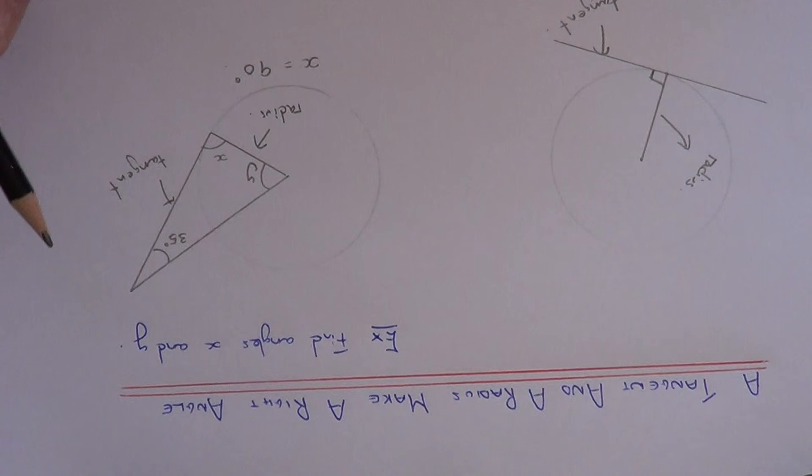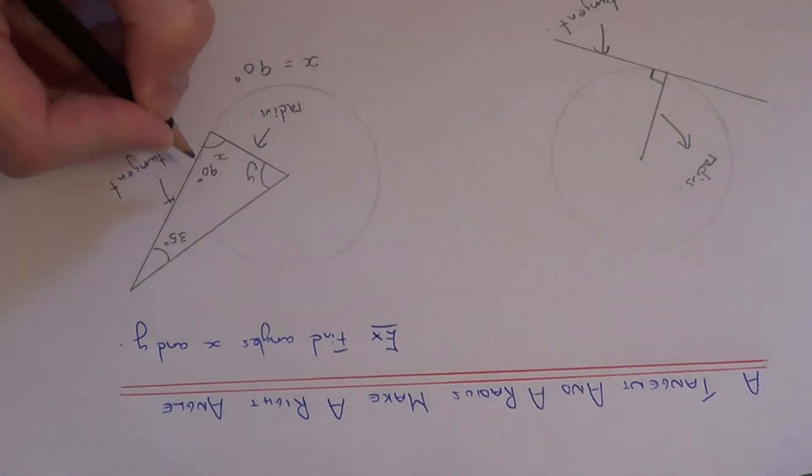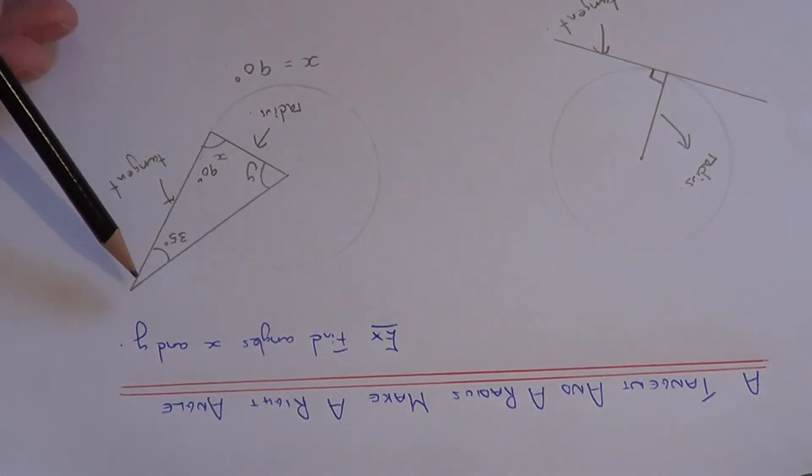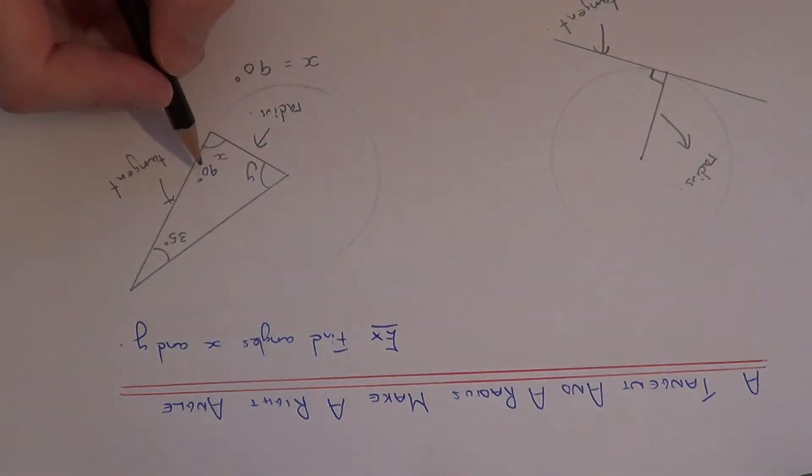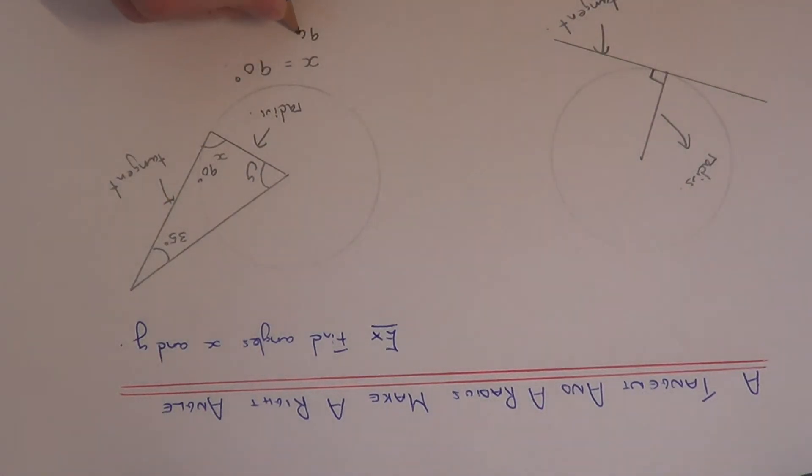So we just now need to work out angle y. This is quite easy because the angles in a triangle add up to 180 degrees. So to get y we just need to add the 90 and the 35 together. That will give 125 degrees.